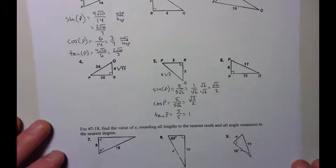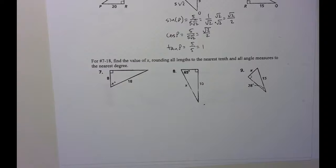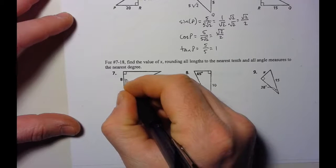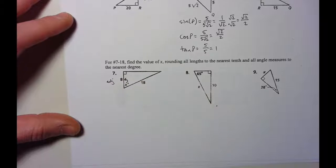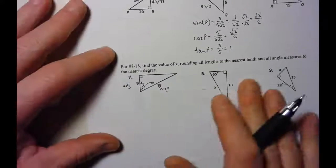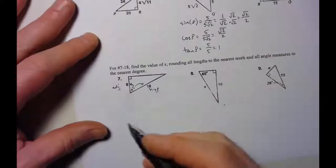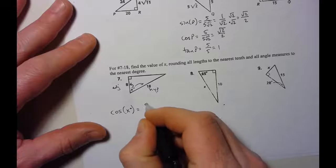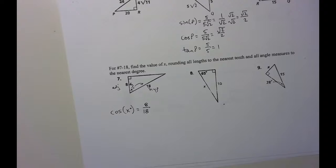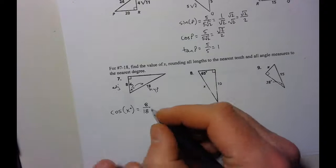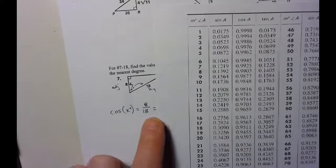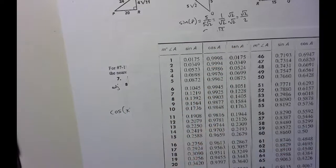Number 7: find the value of x, rounding all lengths to the nearest tenth and angle measures to the nearest degree. I need to find an angle measure. The 8 is the adjacent side to the angle, and 18 is the hypotenuse — it's across from the right angle. Adjacent and hypotenuse means cosine. So cosine of x° equals adjacent over hypotenuse: 8 divided by 18 gives me 0.4̄ repeating.